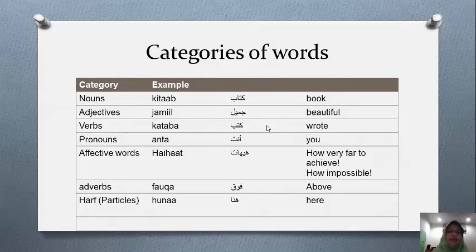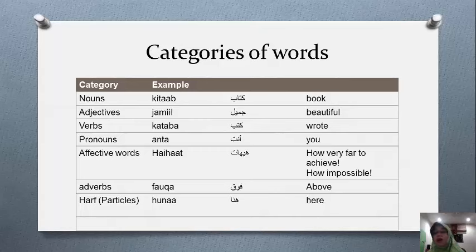We also have affective words such as 'hayhat' — meaning 'how very far to achieve' or 'how impossible'. Adverbs, as in 'fawqa' (above) and 'tahta' (below). And particles — there are many many particles in Arabic, such as 'wa', which means 'and' and can also have several other meanings. Also 'huna' meaning 'here'.